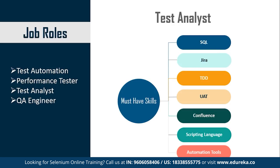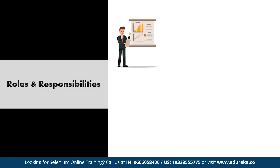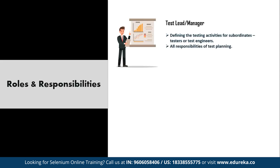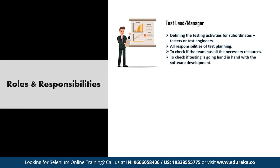Now let's look at the roles and responsibilities of a testing automation engineer. In software testing, every company defines its own hierarchy, roles and responsibilities. But broadly, there are two levels in a software testing team. The first is the test lead or manager, who is responsible for defining testing activities for subordinates, test planning, ensuring the team has necessary resources, checking that testing aligns with software development in all phases, preparing status reports, and updating the project manager regularly.